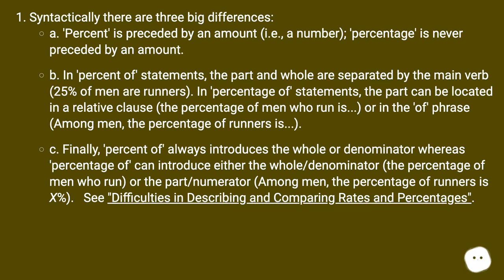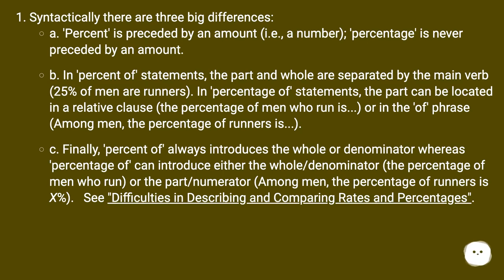Syntactically, there are three big differences. A: A percent is preceded by an amount, i.e., a number. Percentage is never preceded by an amount. B: In 'percent of' statements, the part and whole are separated by the main verb — '25% of men are runners.' In 'percentage of' statements, the part can be located in a relative clause — 'the percentage of men who run is' — or in the rephrase, 'among men, the percentage of runners is.' C: 'Percent of' always introduces the whole or denominator, whereas 'percentage of' can introduce either the whole/denominator ('the percentage of men who run') or the part/numerator ('among men, the percentage of runners is x percent').